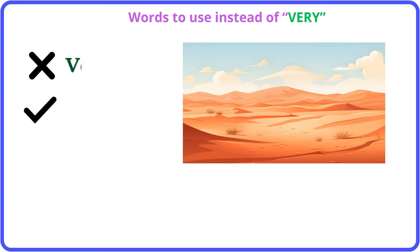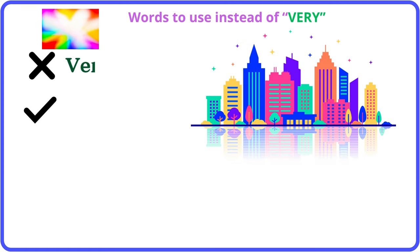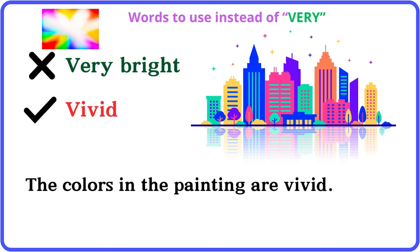Very large: vast. The desert is vast and stretches for miles. Very bright: vivid. The colors in the painting are vivid.